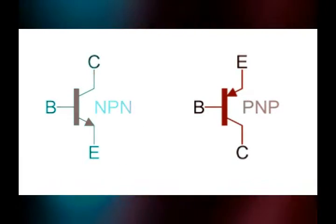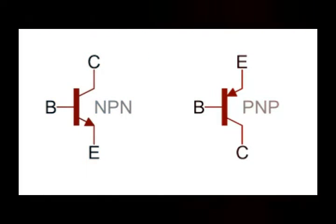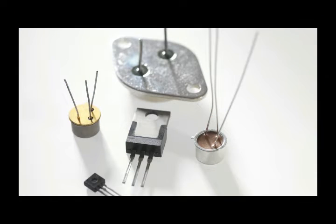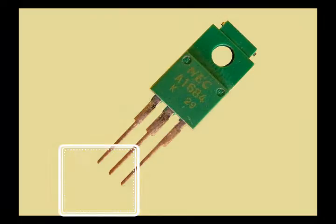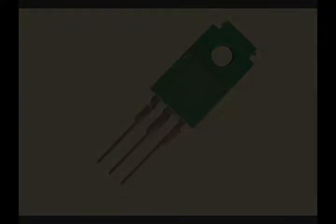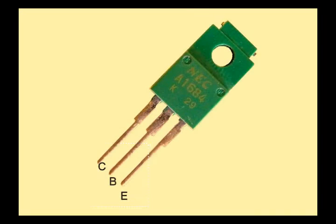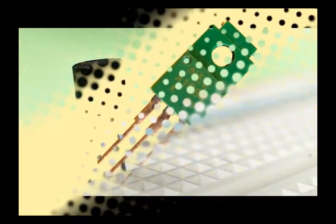NPN and PNP transistor symbols. Transistors basically have three terminals. In BJT, these terminals are called collector, base, and emitter, and we show them with the three letters B, C, and E respectively.